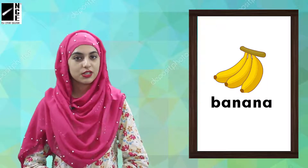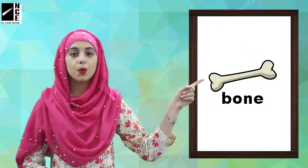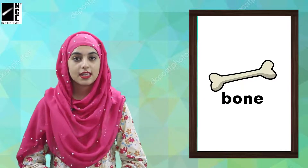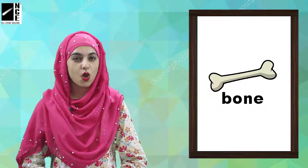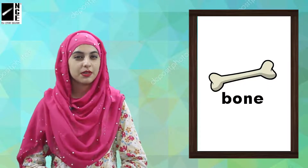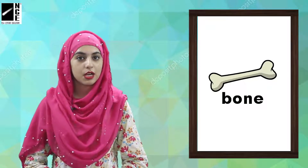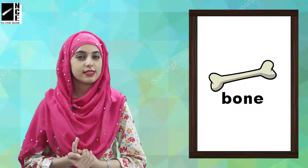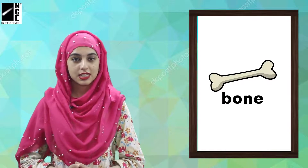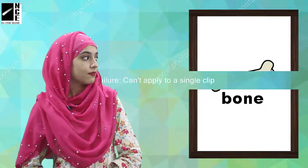The next picture. This is a bone. This is a bone, and this is a dog. When we eat chicken, we have a bone, and then we give the bone to the dog. Sometimes a cat also eats it. So we have seen some pictures: bulb, bowl, banana, bone.